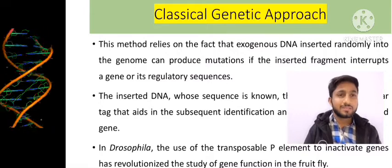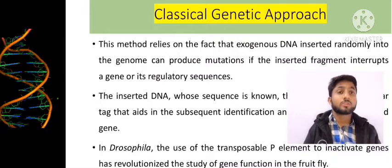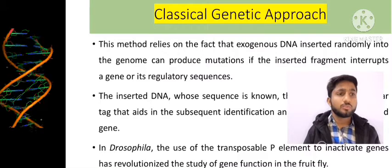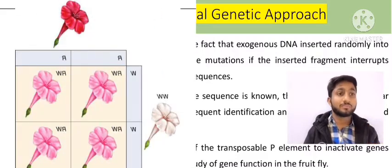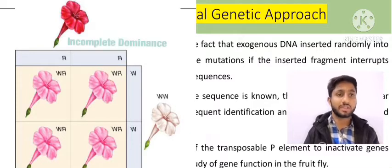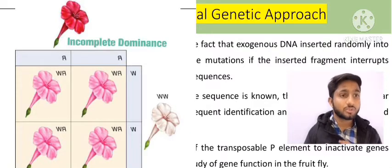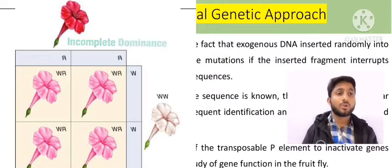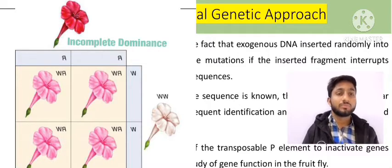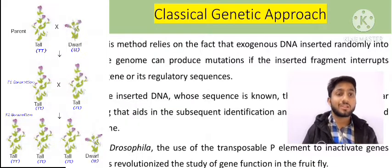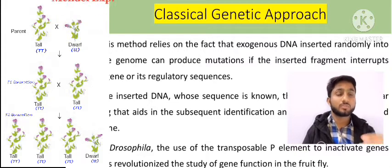In the past, around 1702, scientists crossed plants of different species and obtained surprising results. For example, when a scientist crossed a tall plant with a short plant, the expectation was that the next generation would produce intermediate-sized plants.